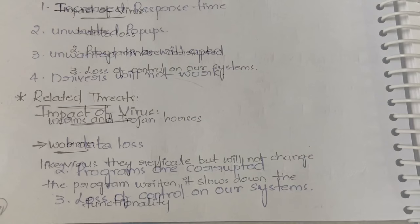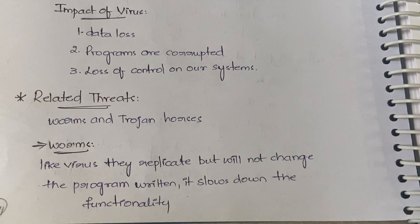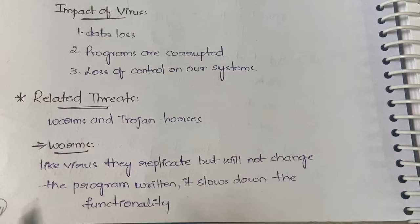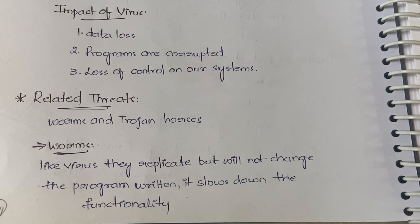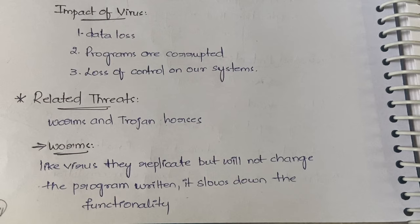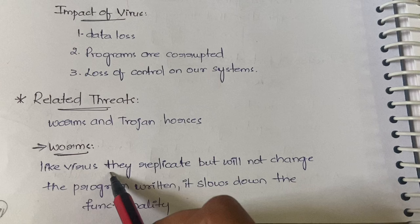The related threats to viruses are worms and Trojan horses. Worms and Trojan horses are also similar to viruses in that they affect and disturb the functionality of the system. Let's see how worms and Trojans are different from viruses.